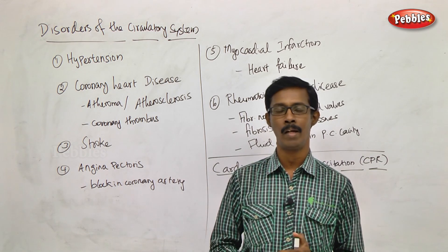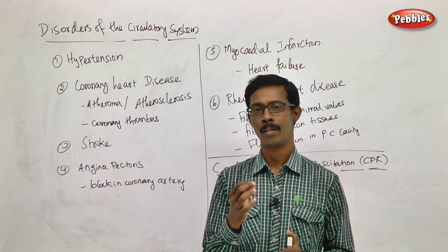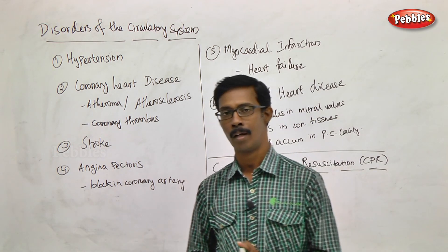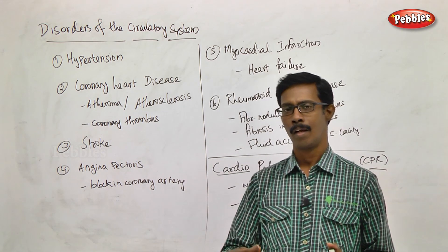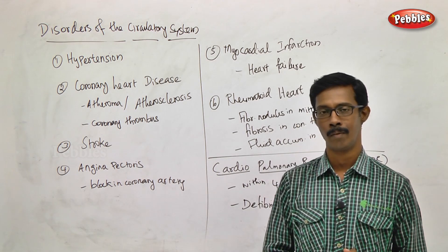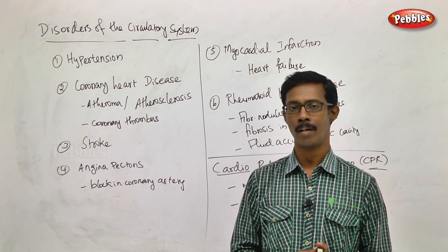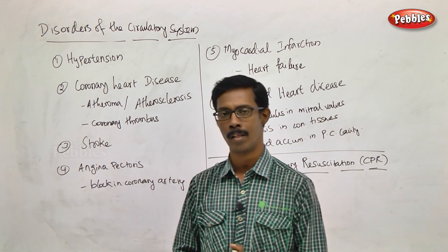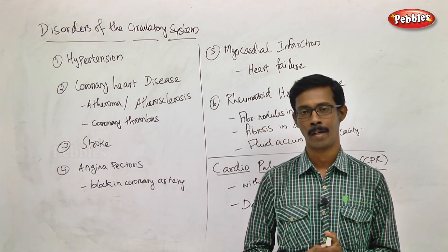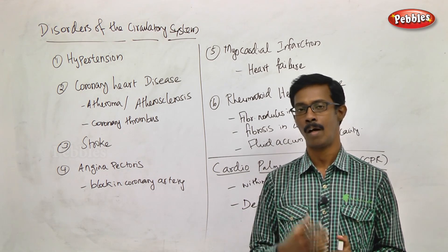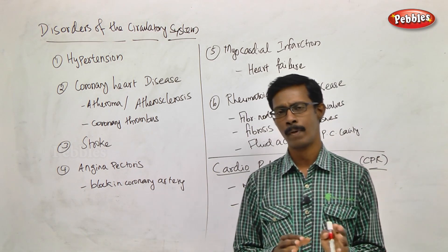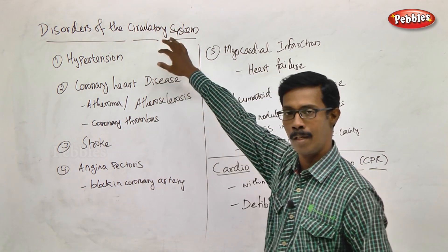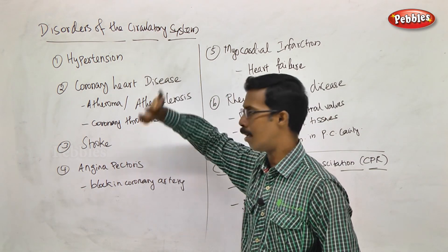If the blood clot is in the brain and pressure is too high, it leads to death. If it is in the heart, it leads to heart attack or heart failure. In major blood vessels, excess pressure leads to death. Whatever it is, hypertension is a very risky symptom for heart failure.